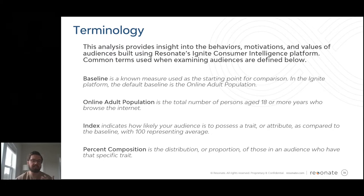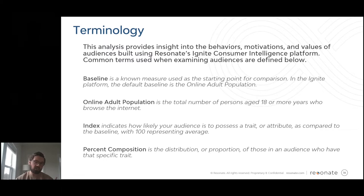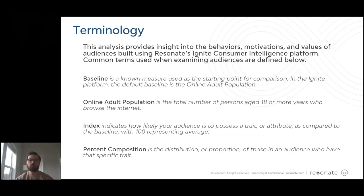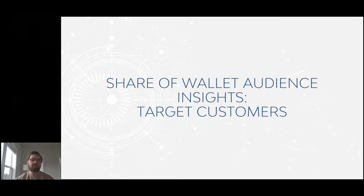Composition is your measure of scale and index is your measure of uniqueness. Percent composition speaks to the proportion or percentage of the audience that has a given attribute or trait. Index speaks to how much more or less likely your audience is to have a specific trait or attribute compared to your baseline — the average adult online in this case.